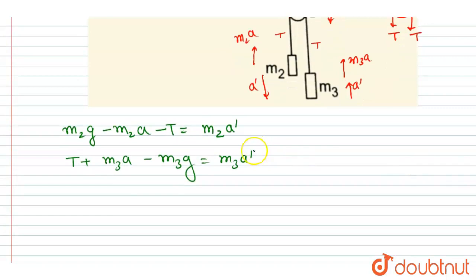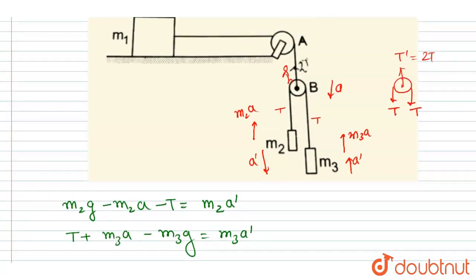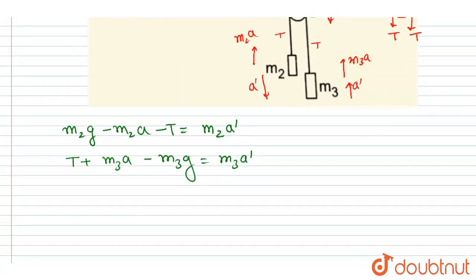Now we want the acceleration of that block, so I will write the force equation on the upper block: 2t equals m1 times a'.